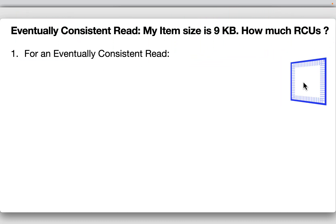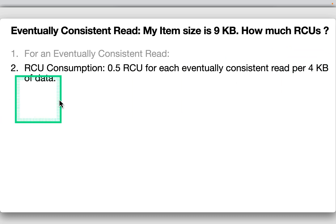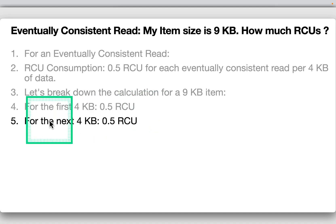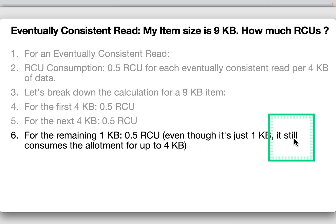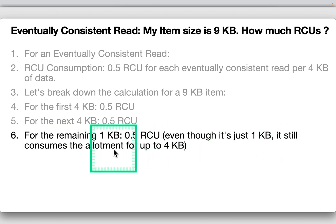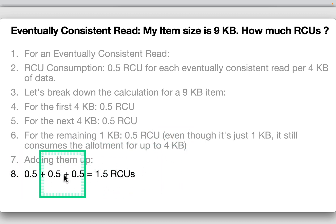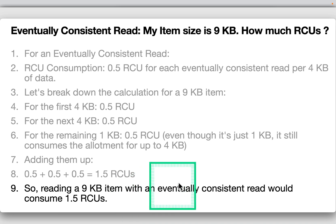For an eventually consistent read, the RCU consumption is 0.5 RCU per eventually consistent read per 4KB of data. For a 9KB item: first 4KB = 0.5 RCU, next 4KB = 0.5 RCU, remaining 1KB = 0.5 RCU (still consumes the full 4KB allotment). Adding them up: 1.5 RCUs total for an eventually consistent read of a 9KB item.